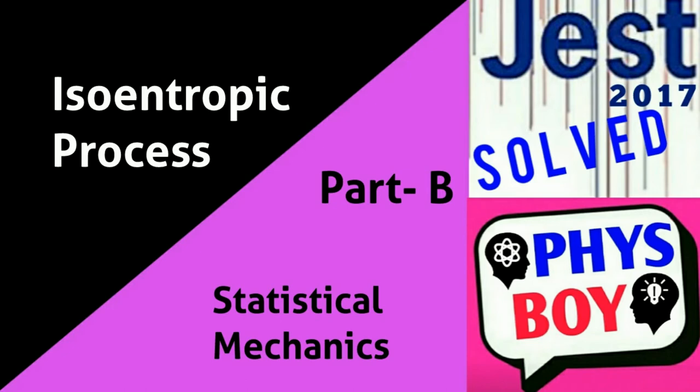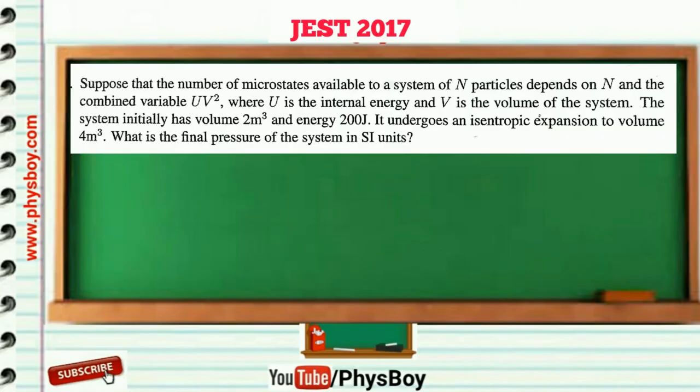The question states: suppose that the number of microstates available to a system of N particles depends on N and the combined variable UV², where U is the internal energy and V is the volume of the system. The system initially has volume 2 m³ and energy 200 J. It undergoes an isentropic expansion to volume 4 m³. What is the final pressure of the system in SI units?